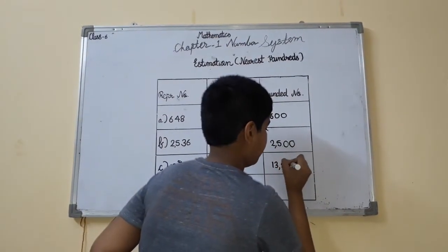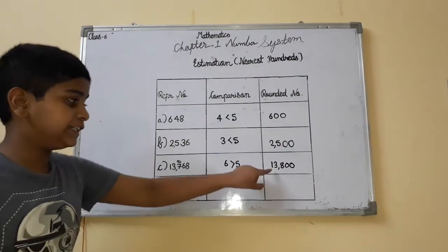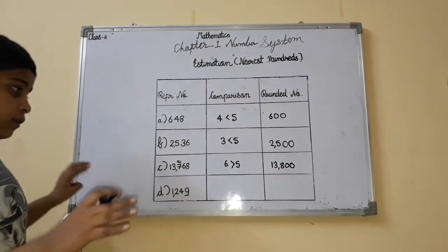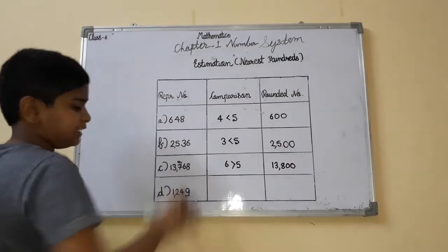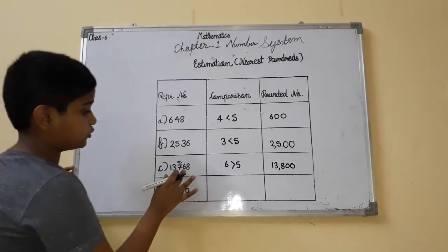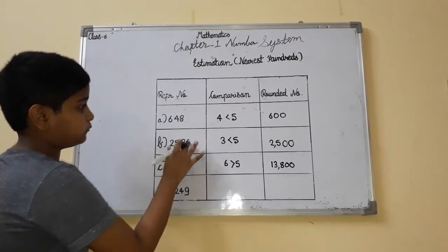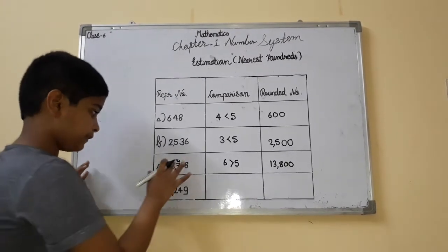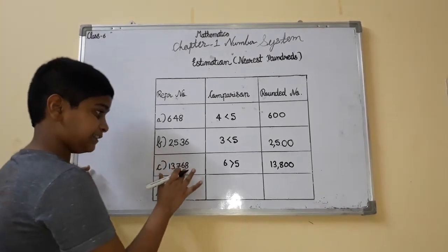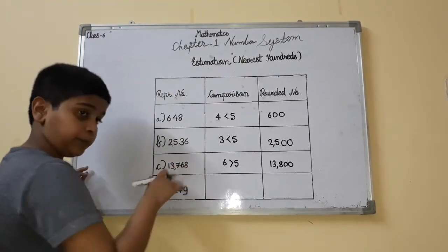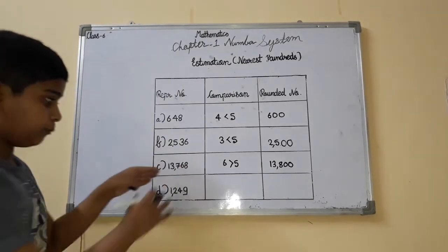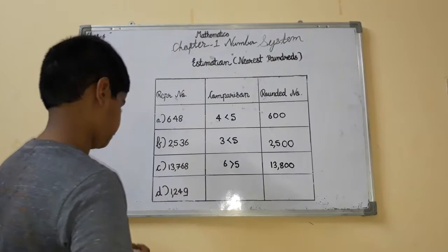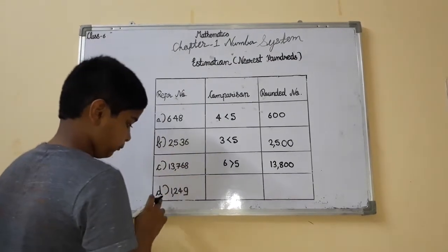Here it will add. How much will 7 plus 1 become? 8, and this will be 13,800. You can see the nearest hundred will be 0, 0, because we are rounding to hundreds. Because 6 was greater, we have 7 plus 1, and here it will be 0, 0.